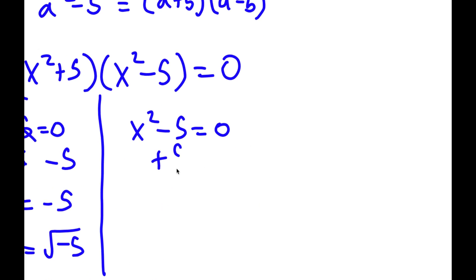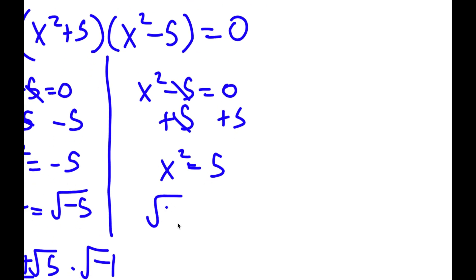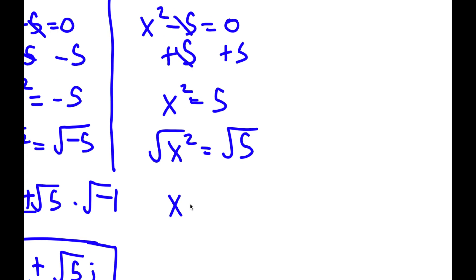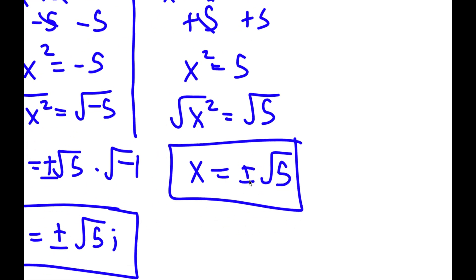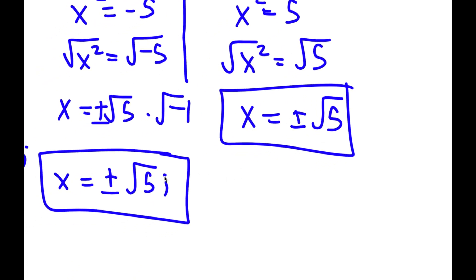Now for the second equation, I have x squared minus 5 is equal to 0. I'm going to add 5 on both sides, so now I have x squared is equal to 5. If I take the square root on both sides, the square root of x squared is x, and the square root of 5 gives positive or negative square root of 5. So these are two solutions, giving me four total solutions to this problem.